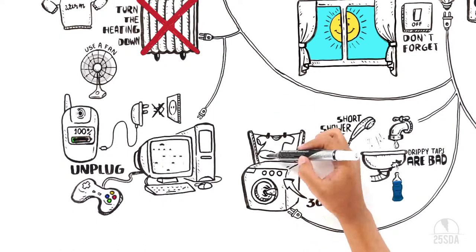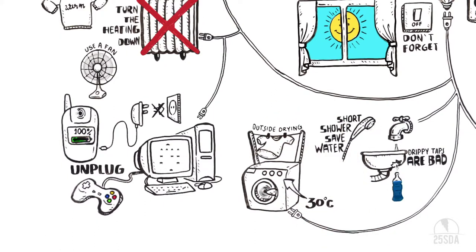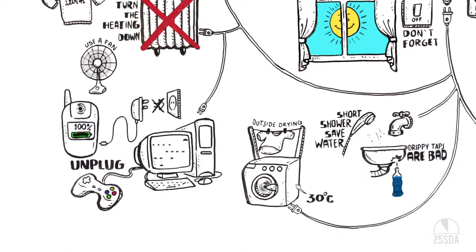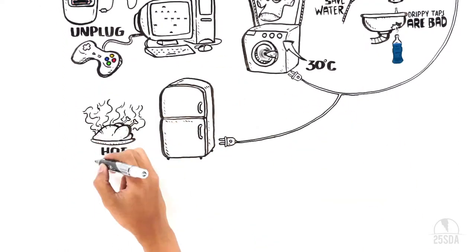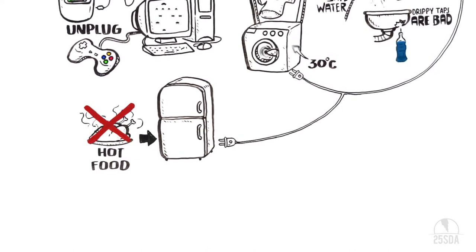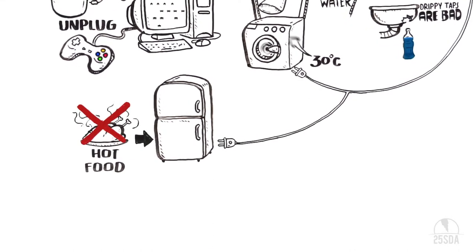Set your washing machine to wash at 30 degrees Celsius. Dry your clothes outside instead of using a tumble dryer. Close the fridge door and never put a hot meal in the fridge. It takes a lot of energy to cool it down.